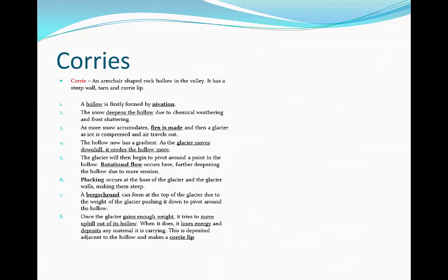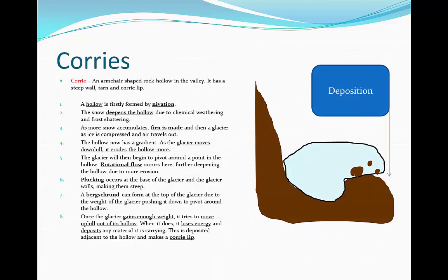Then, once the glacier gains enough weight, it tries to move uphill out of its hollow. When it does so, it loses energy and deposits any material it's carrying. This is deposited adjacent to the hollow and forms a corrie lip, which you can see pointed by deposition on the graph.